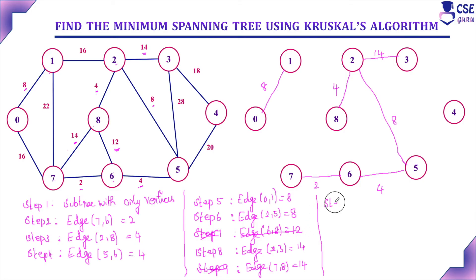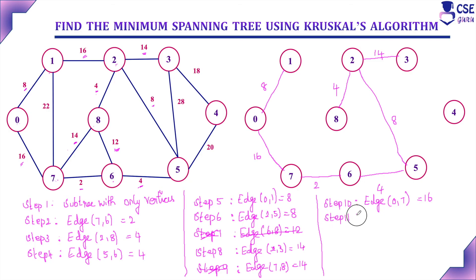The next minimum cost edges are 1,2 with cost 16 and 0,7 with cost 16. In order, we include edge 0,7 with cost 16 — its inclusion does not form a cycle. Then we consider edge 1,2 with cost 16, but including it would form a cycle, so we skip this edge.